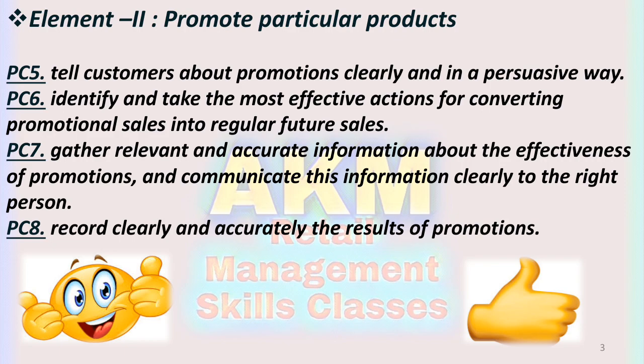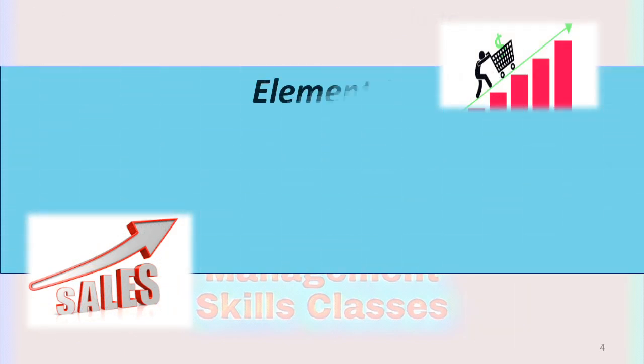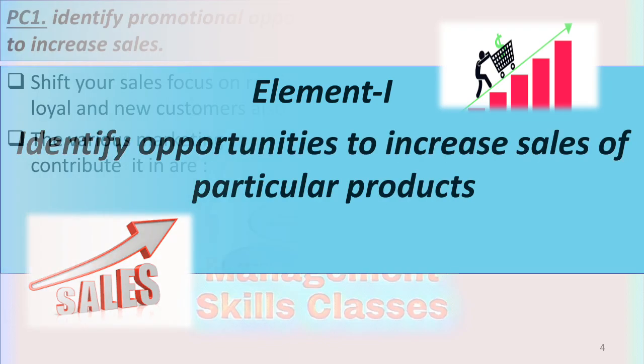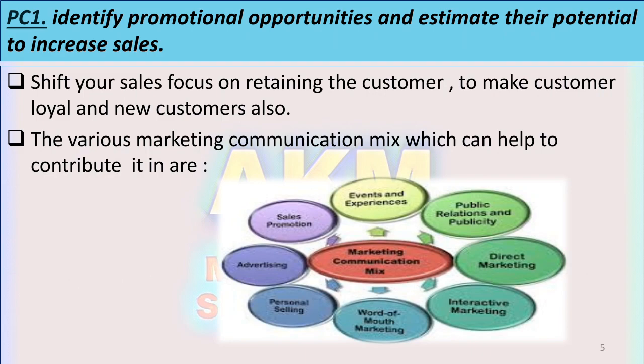We will now discuss these performance criteria under the two elements one by one. The first element is: Identify opportunities to increase sales of particular products. PC1 is: Identify promotional opportunities and estimate their potential to increase sales.